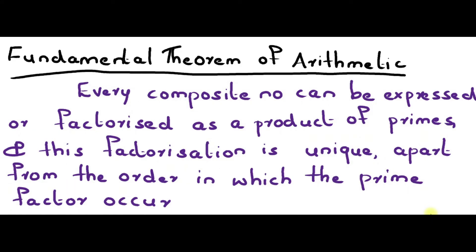In this video I am going to explain the Fundamental Theorem of Arithmetic, which can be seen in your NCERT Class 10, Real Numbers, Chapter 1. The theorem states: every composite number can be expressed or factorized as a product of primes, and this factorization is unique apart from the order in which the prime factors occur. Any natural number can be written as the product of its prime factors.